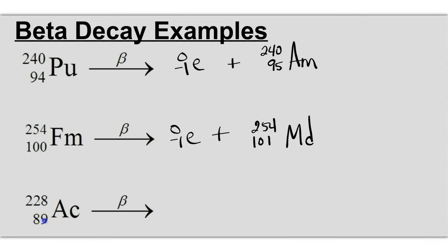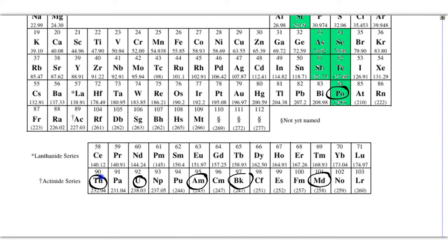Last one, 228 over 89 actinium undergoes a beta decay. We get a 0 over negative 1 E, plus 228 over 90, and element number 90 is thorium.